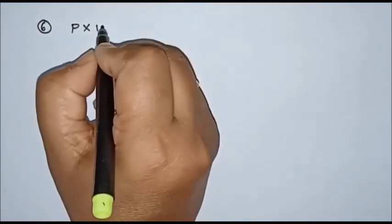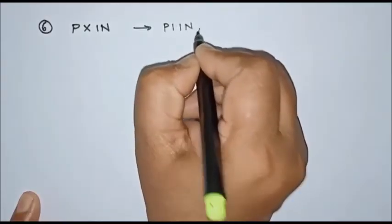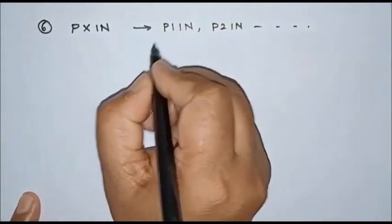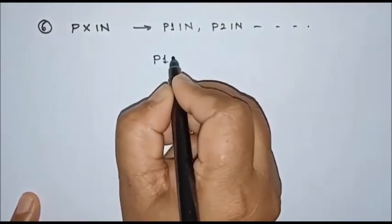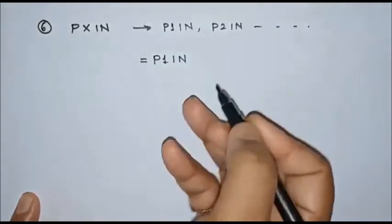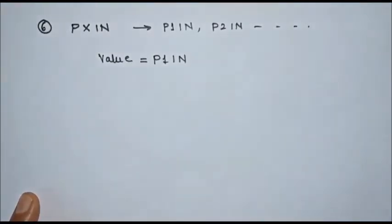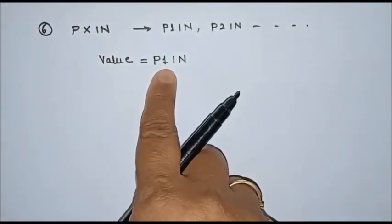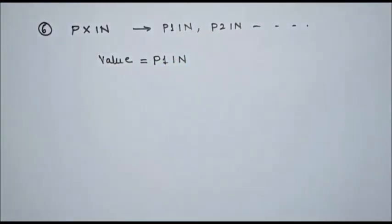After initializing the pull-up or pull-down configuration, we can read data from the input port pin using the PxIN register. One register is available per port — P1IN, P2IN, and so on. To read data from port 1, we use P1IN and store the value in a variable. For example: value = P1IN. Whatever data is available on port P1 will now be stored in the variable. These are the registers generally used for GPIO configuration of port pins.